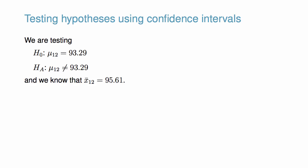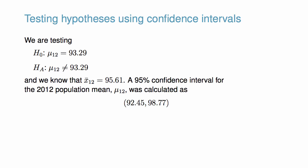However, to evaluate whether this provides strong evidence that there has been a change, we must consider the uncertainty associated with a sample mean. A confidence interval provides a range of plausible values for the population mean.